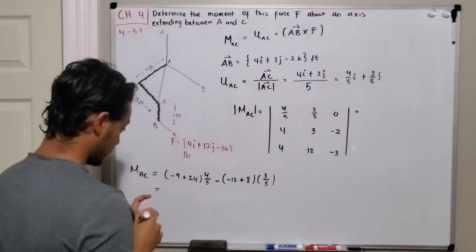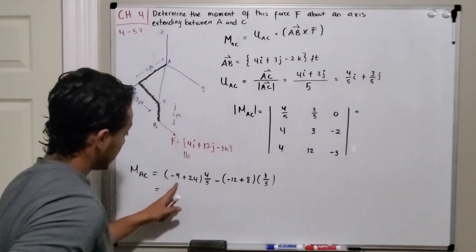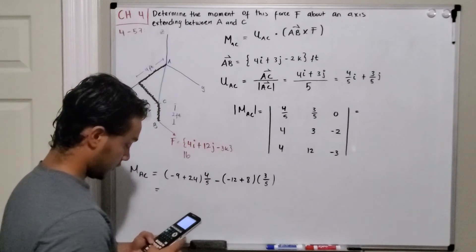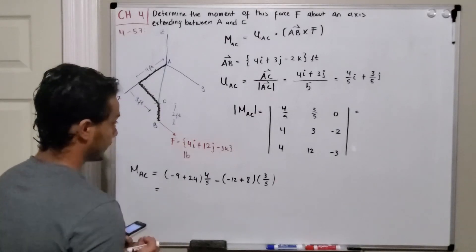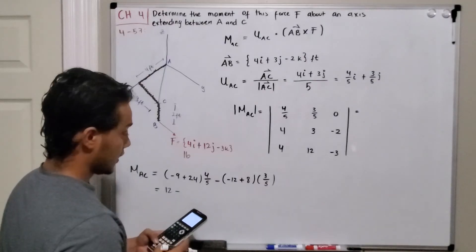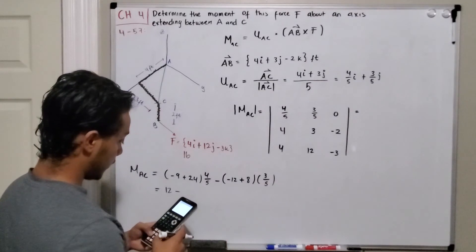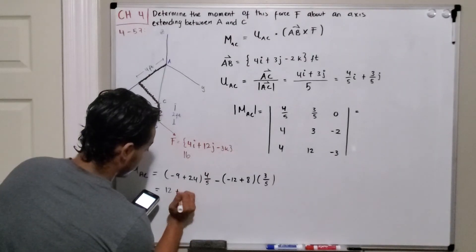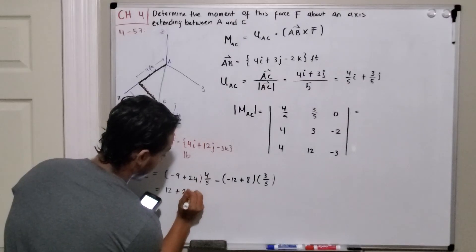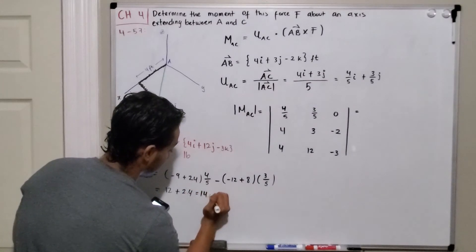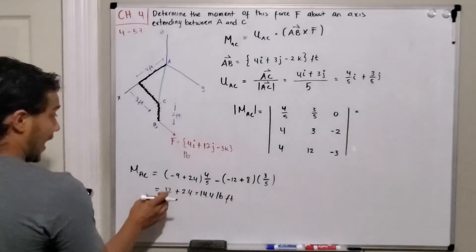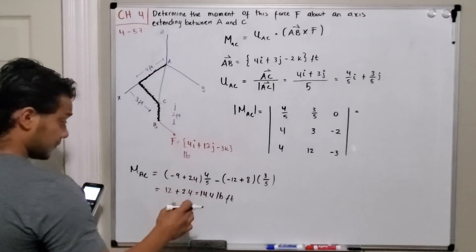Evaluating: negative 9 plus 24 gives 15, multiplied by 4/5 gives 12. Then negative 12 plus 8 gives negative 4, multiplied by 3/5 gives negative 2.4. Since we have a minus sign in front, it becomes positive 2.4. Adding: 12 plus 2.4 gives 14.4 pound-feet. This is the magnitude of the moment about axis AC.